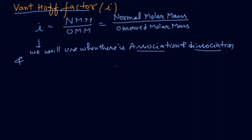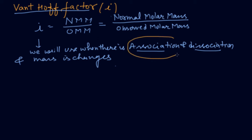In acids or any solution, when association or dissociation takes place, the mass changes. Whenever the mass changes, i changes, and then all the colligative properties will change accordingly. We adjust i to account for the change in the colligative property.